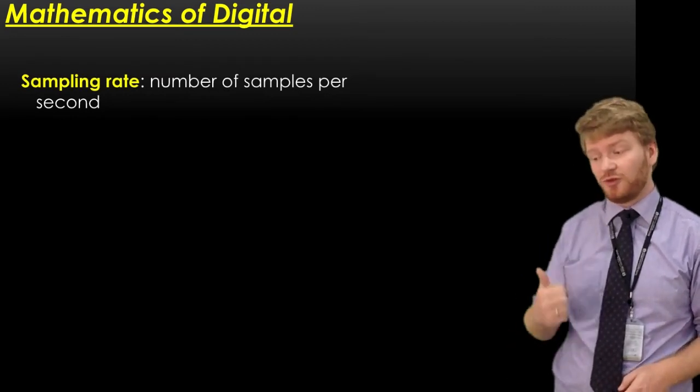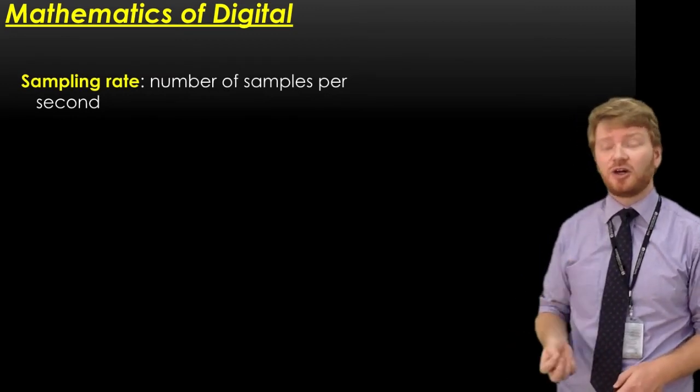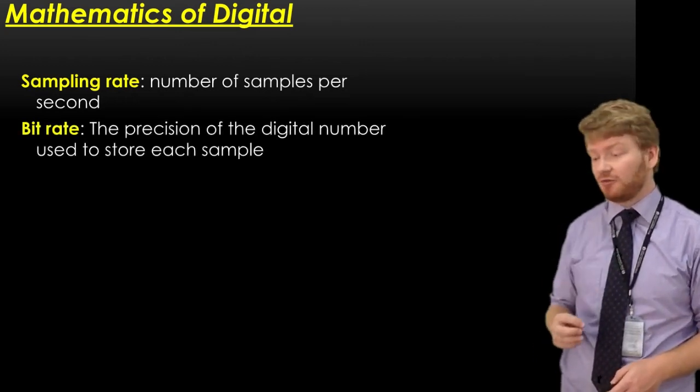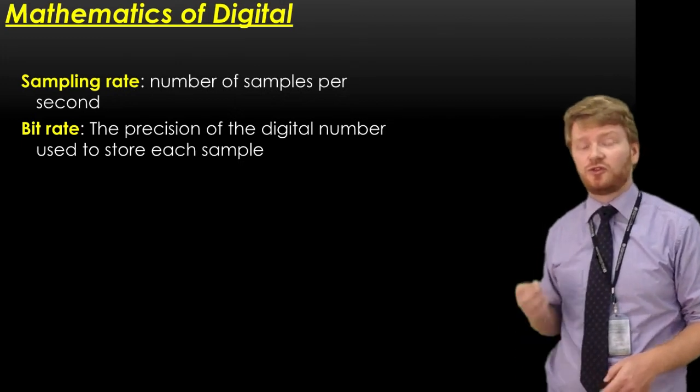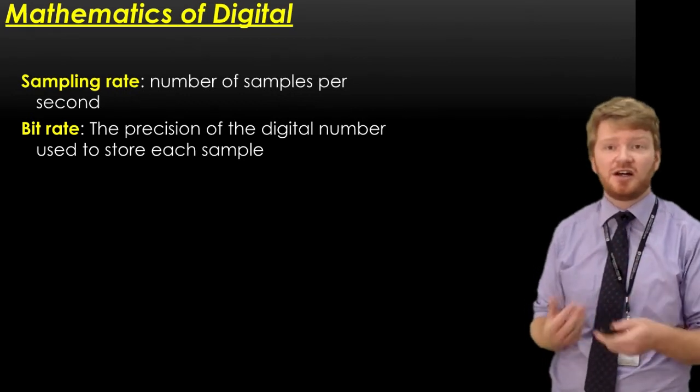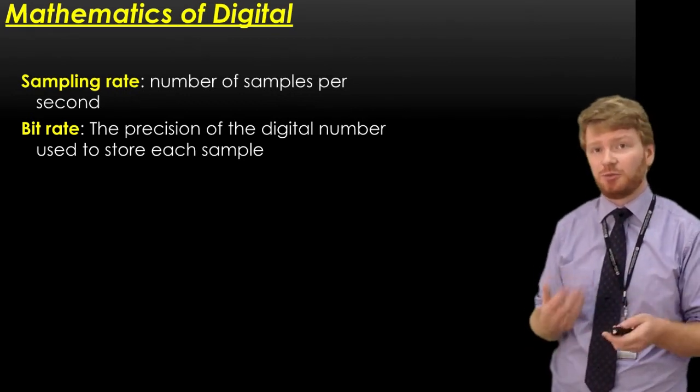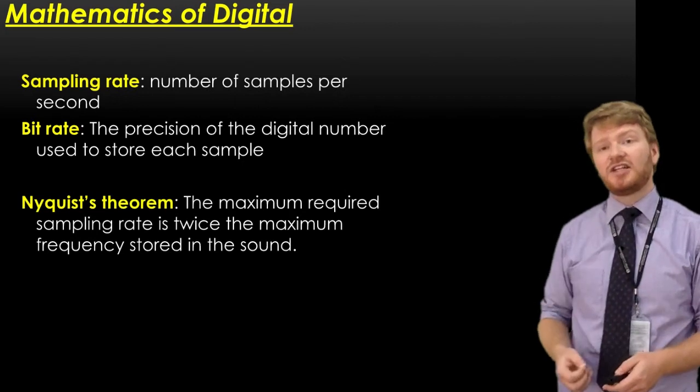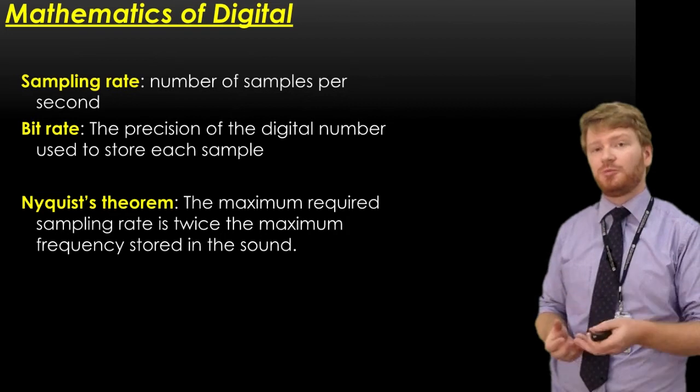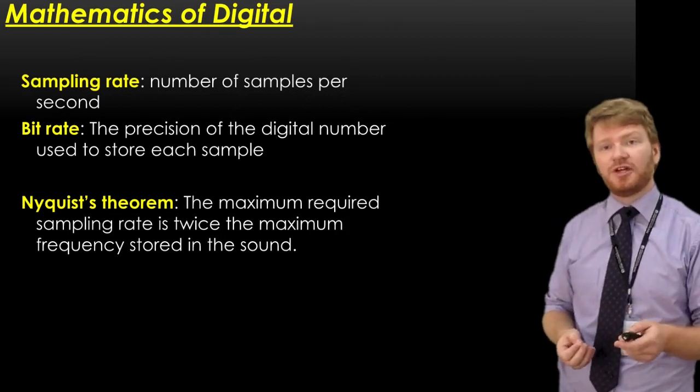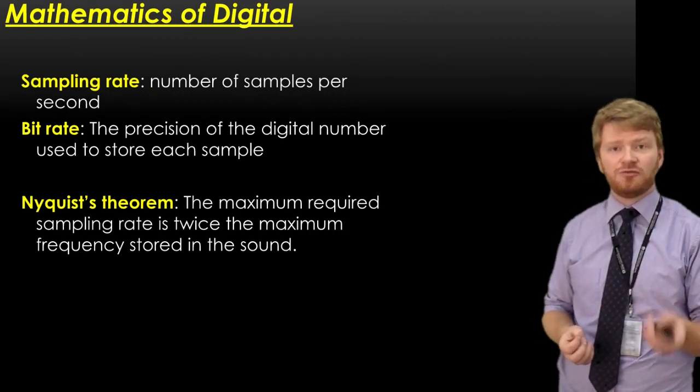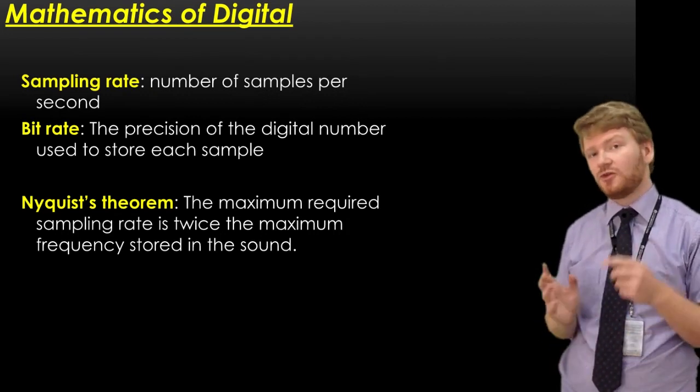There are two things likely to come up in your course. First is sampling rate - the number of samples you take every second. Then there's bit rate - the precision of the digital number used to store the information. By making both as high as possible, you get the highest quality and reproduction of the original. That's linked to Nyquist's theorem, which says to accurately reproduce a signal, the maximum sampling rate should be twice the maximum frequency in your original signal.